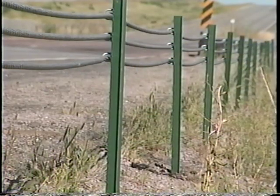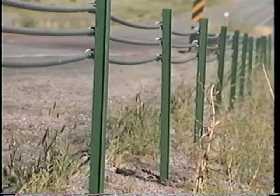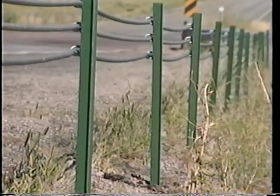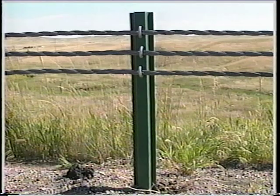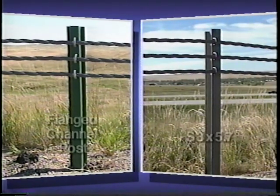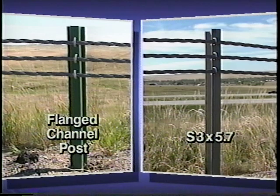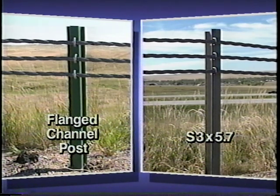The state of South Dakota has developed a cable guardrail similar to the G1 system, except that a smaller, less expensive post is used. The flanged channel post used in the South Dakota system weighs only 4 pounds per foot — 40% lighter than the standard S3 by 5.7 post. A flanged channel post and soil plate made of re-rolled rail steel would cost about half as much as the standard G1 post and soil plate. The South Dakota cable system costs almost $1 per linear foot less than the G1 guardrail.